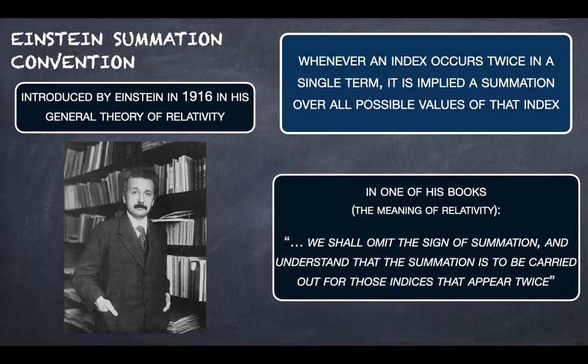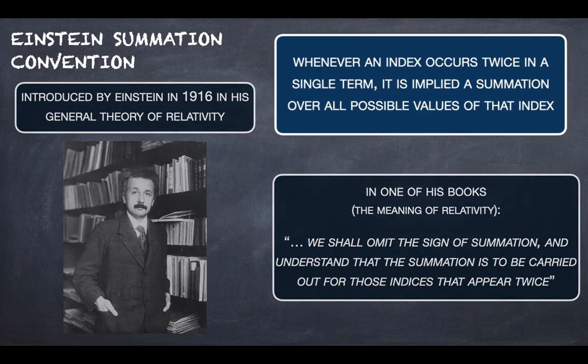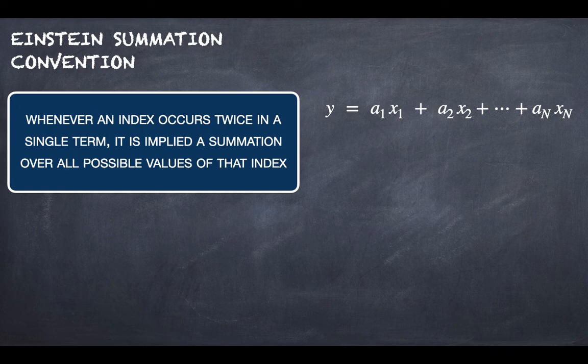So in his words, in one of his books Einstein wrote that we shall omit the sign of summation and understand that the summation is to be carried out for those indices that appear twice.